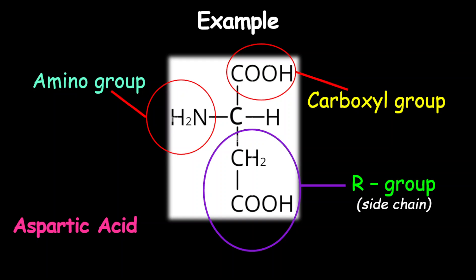Our rule of thumb is that when you finish identifying the groups, you should always have the alpha carbon by itself with all three groups connected to it, and then we have this little H by itself. This amino acid is aspartic acid. It is acidic in nature because the R group contains a COOH — we'll talk about that in the next lesson.